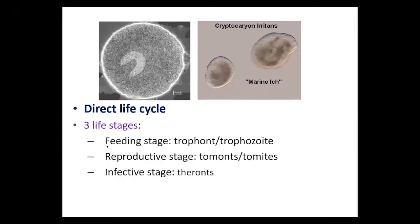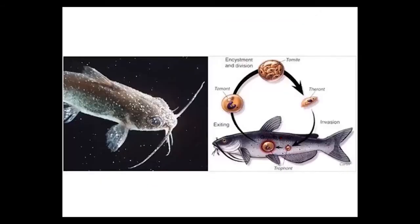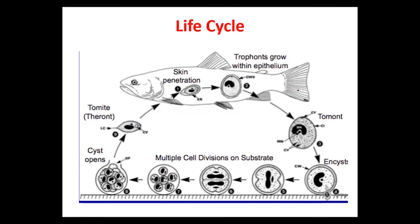In their life cycle there are three stages: the feeding stage is known as the trophont or trophozoite, the reproductive stage is known as the tomont, and the infective stage is known as the theronts. The trophonts are found in the skin and fins of fishes and feed on cellular debris as well as the epithelial tissue. They reach a certain size and then emerge from the epithelial tissue.